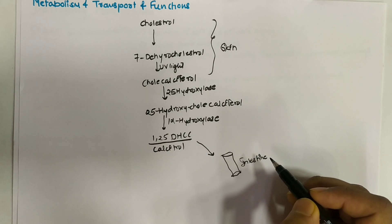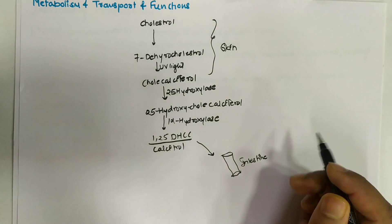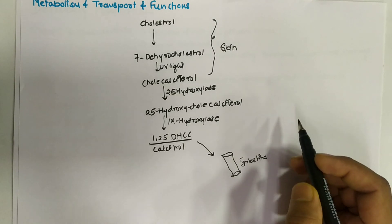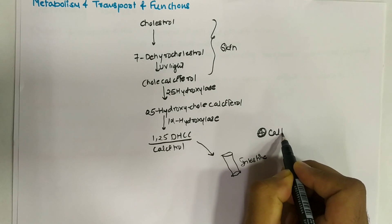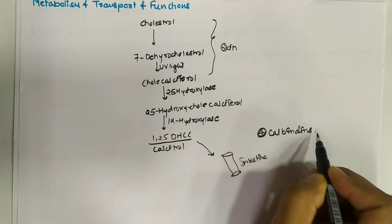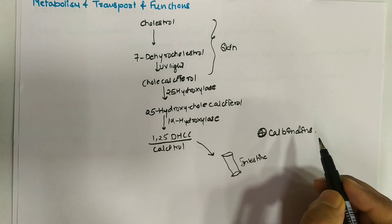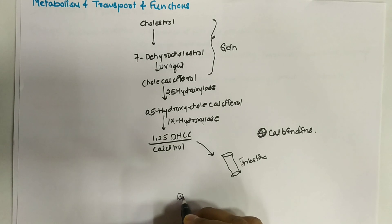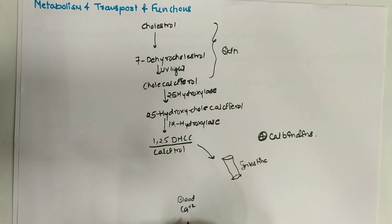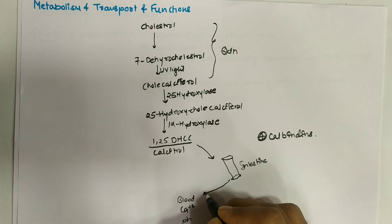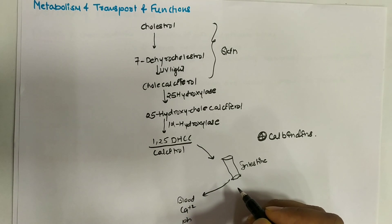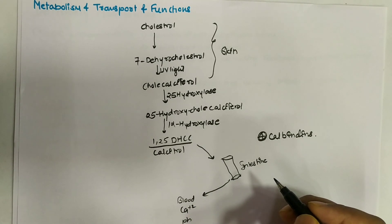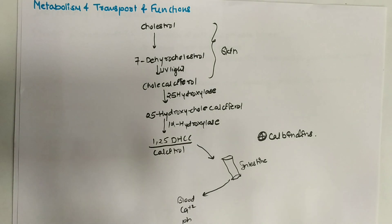In the intestine, calcitriol increases plasma calcium and phosphorus concentration by stimulating the absorption of calcium and phosphorus from the intestine. It does this by enhancing the synthesis of calcium-binding proteins called calbindins. This raises calcium and phosphorus levels in the blood.